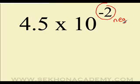When multiplying by a negative power of 10, remember to move the decimal point to the left. In this example, we will move it twice to the left.